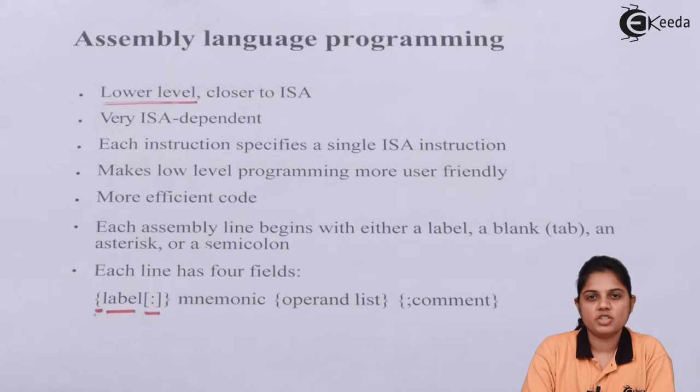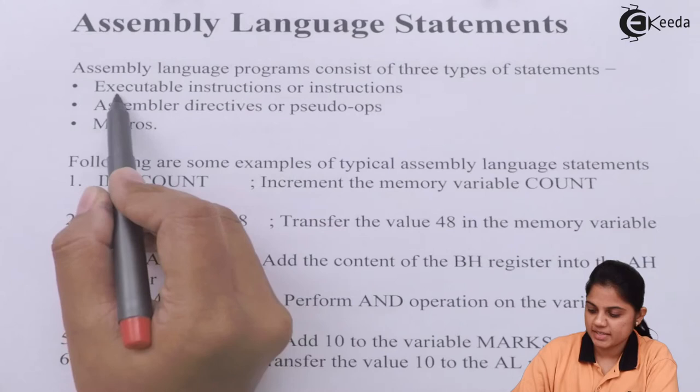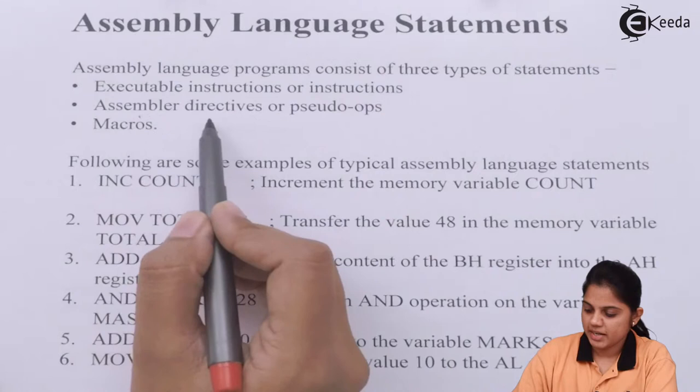Now let's see which different instructions can be used to write this program. An assembly language program consists of three types of statements: one is executable instructions or normal instructions; the second is assembler directives or pseudo-ops; and the third is macros.